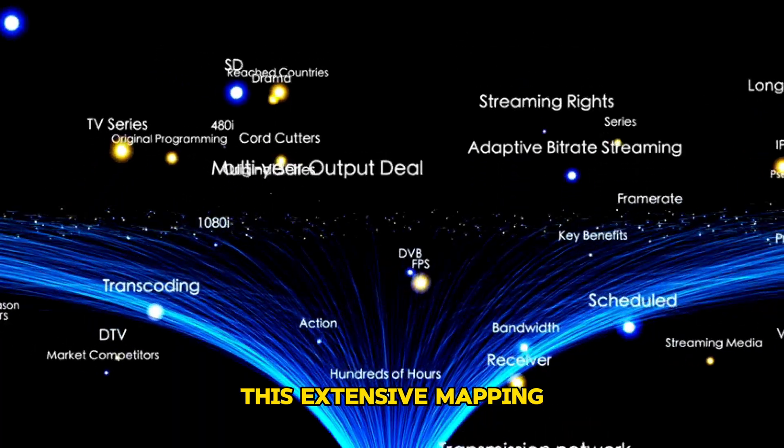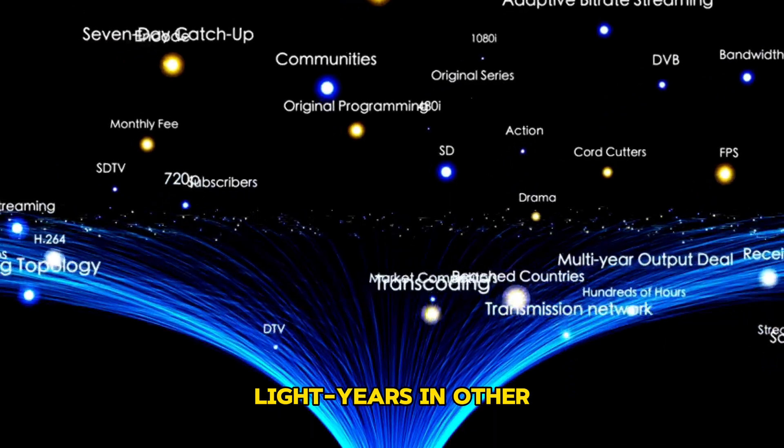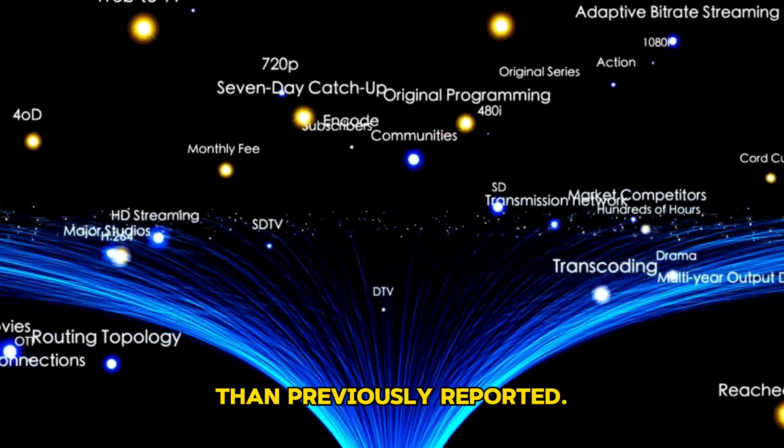This extensive mapping revealed that Andromeda's halo extends 2 million light years in other directions, a larger area than previously reported.